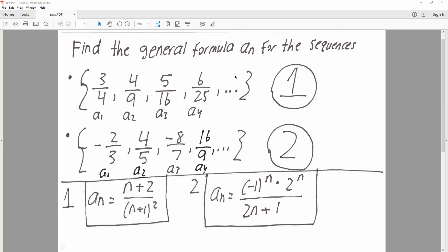Okay, in this question we want to find the general formula for the sequence. So we were given this, so we have 3 over 4, 4 over 9, 5 over 16, 6 over 25, and we want to know the general sequence.